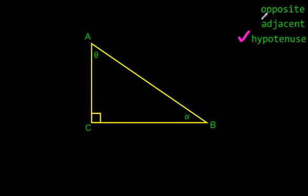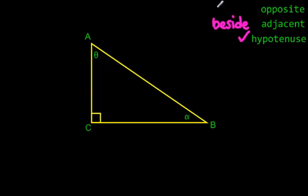Adjacent is a word that usually means like a beside. And the word opposite in trigonometry — with this triangle — I usually think of it as the word across.